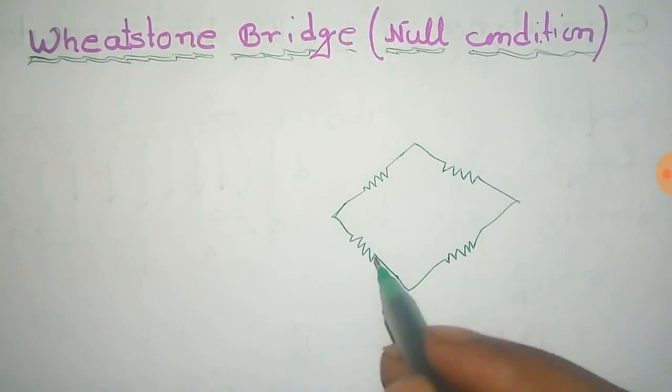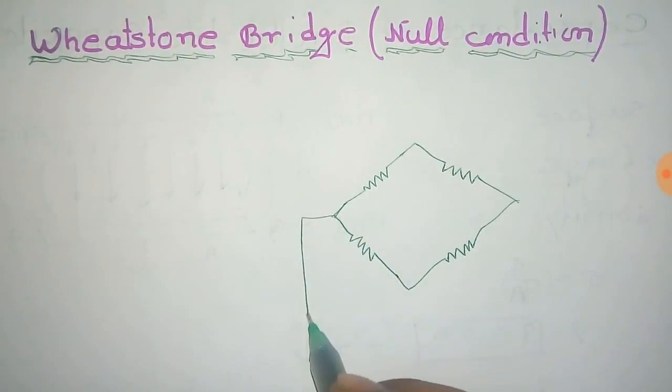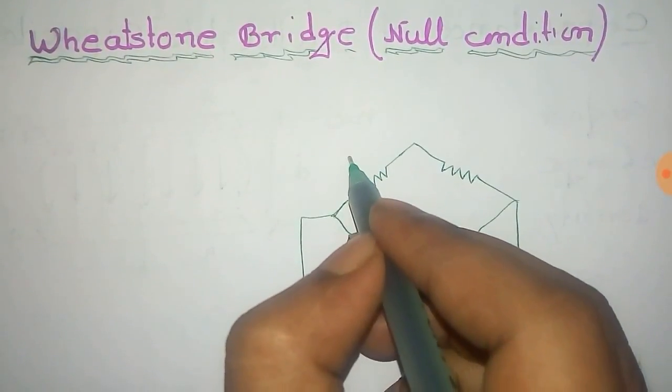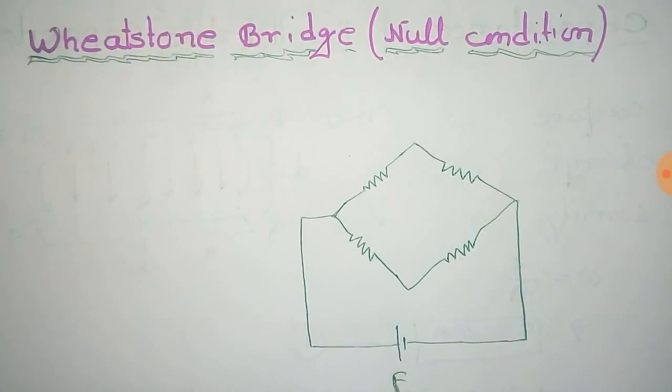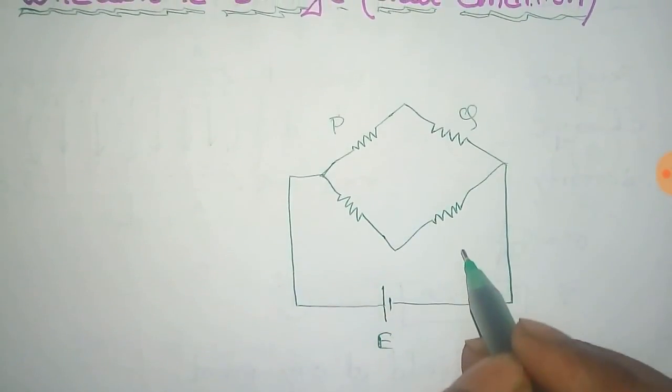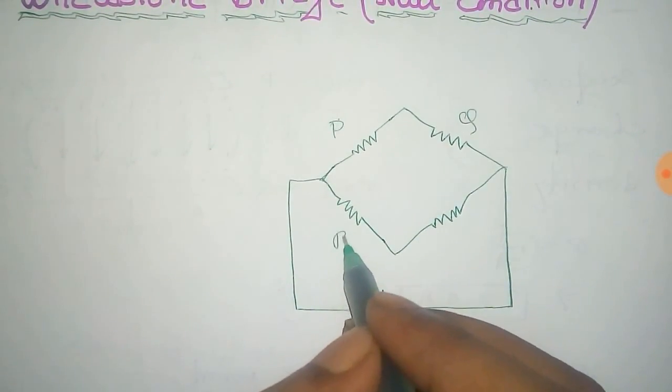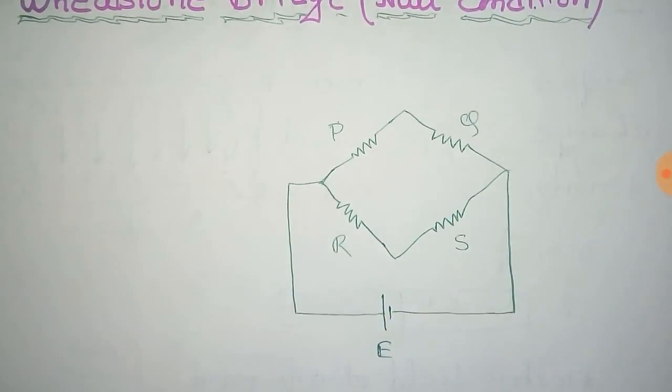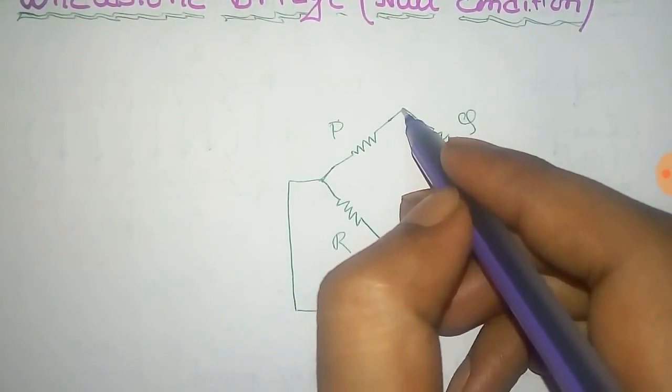And this network is connected with a battery. This battery has the EMF and the resistance. This is P, this is Q, this is R, and this is S.